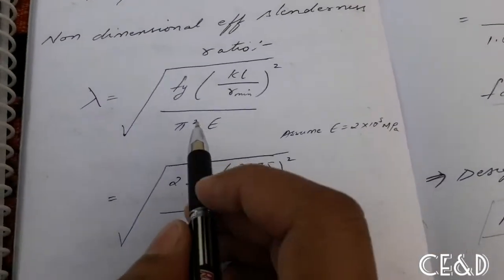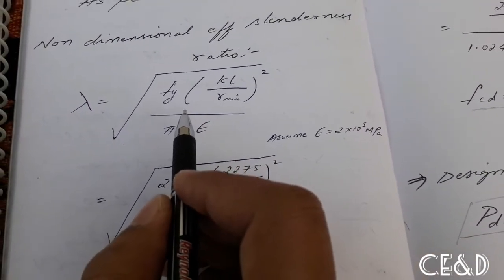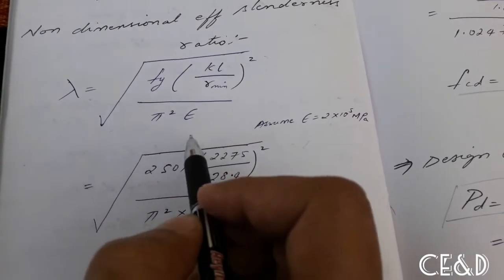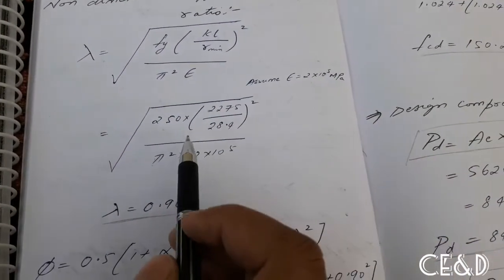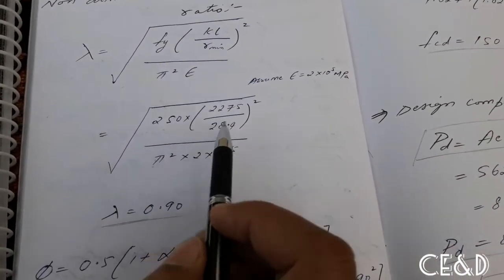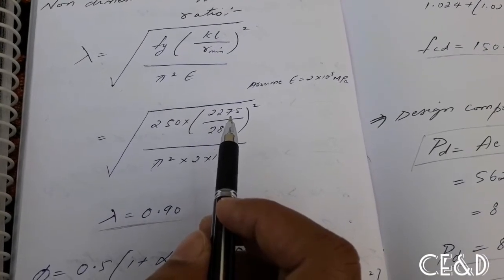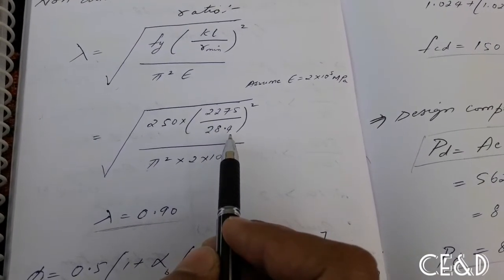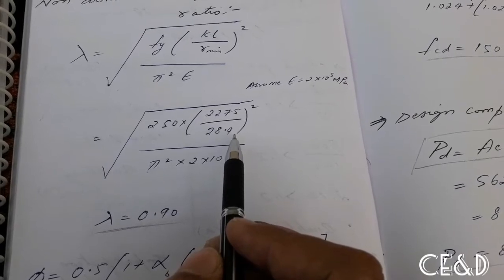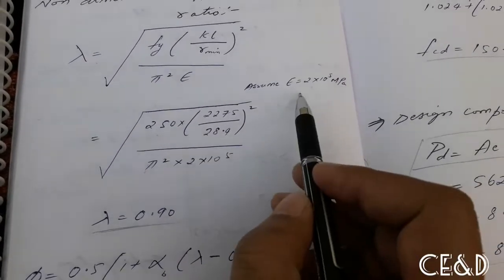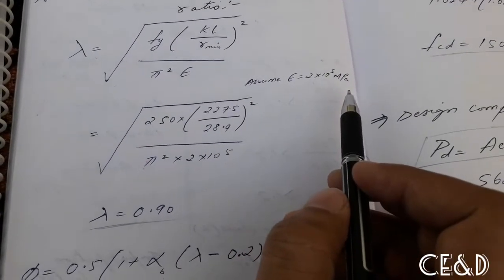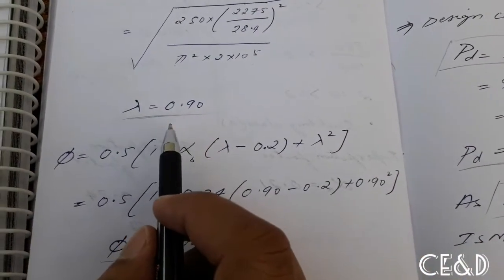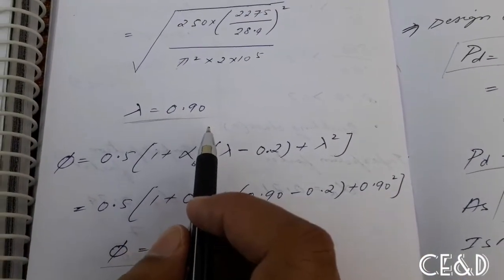Lambda = under root of (FY × (KL/r_min)² / (π² × E)). Substituting: FY = 250 N/mm², KL = 2275 mm (effective length), r_min = 28.4 mm (from steel table), E = 2 × 10⁵ N/mm². Calculating lambda = 0.90.